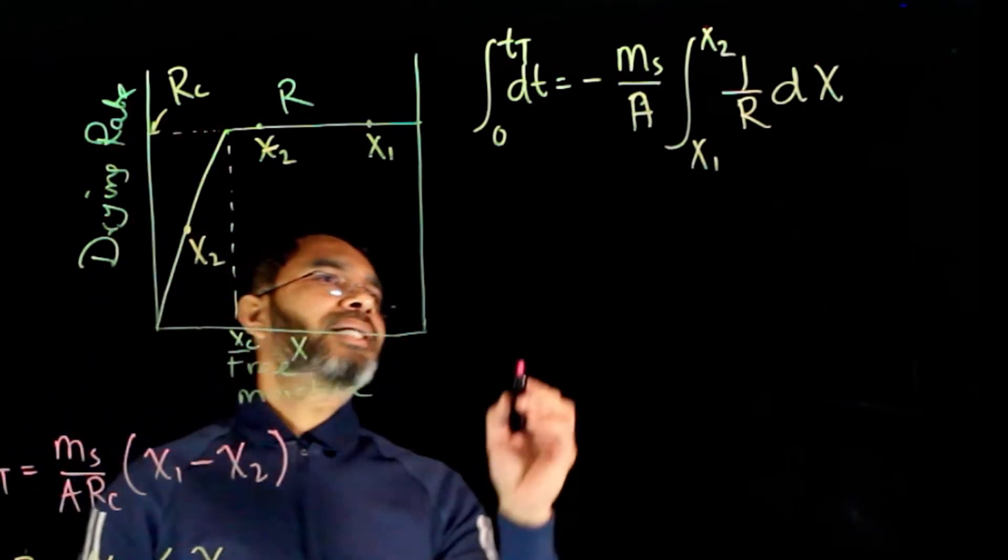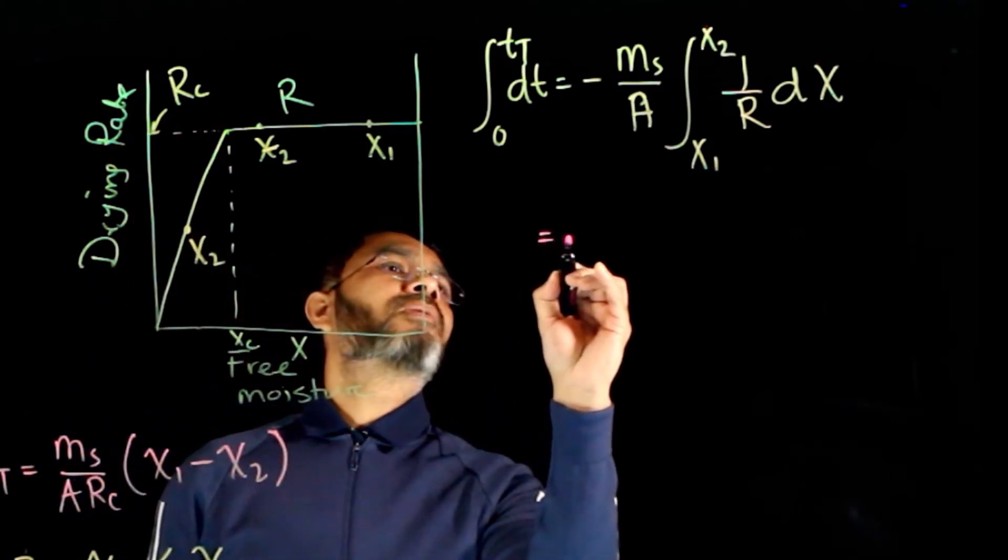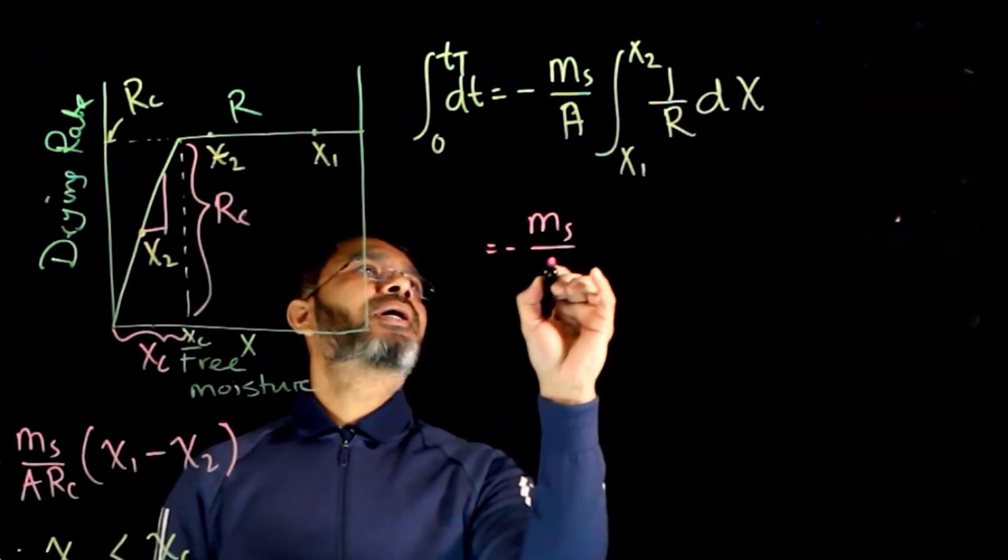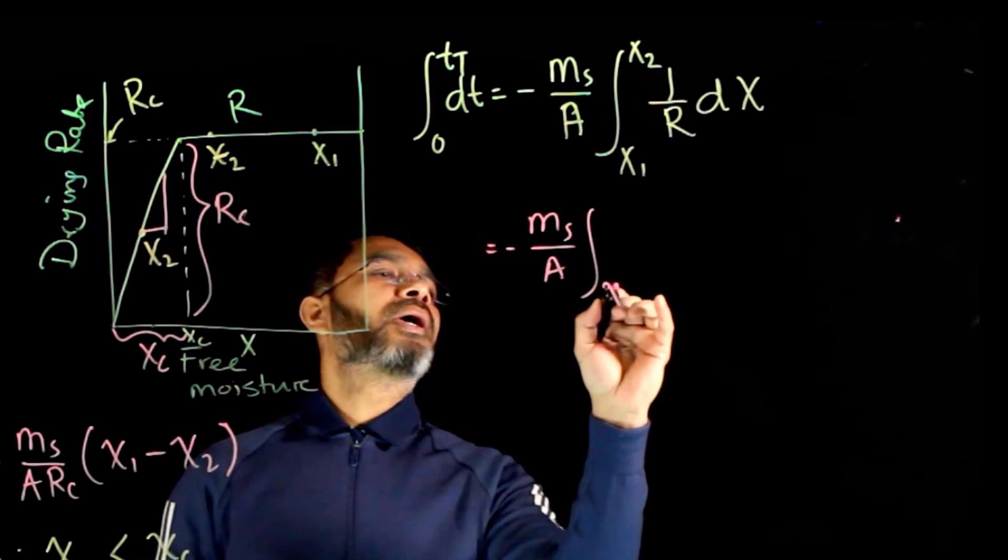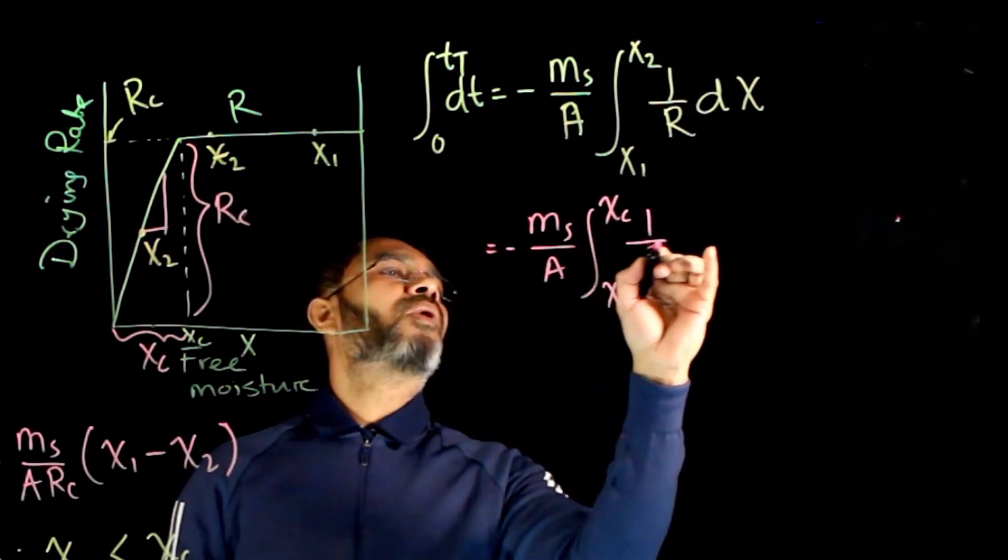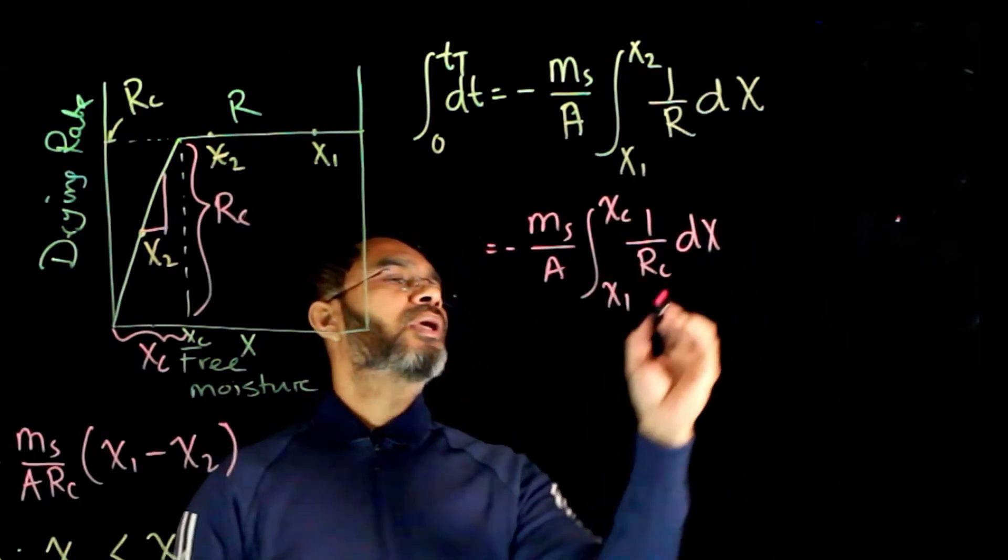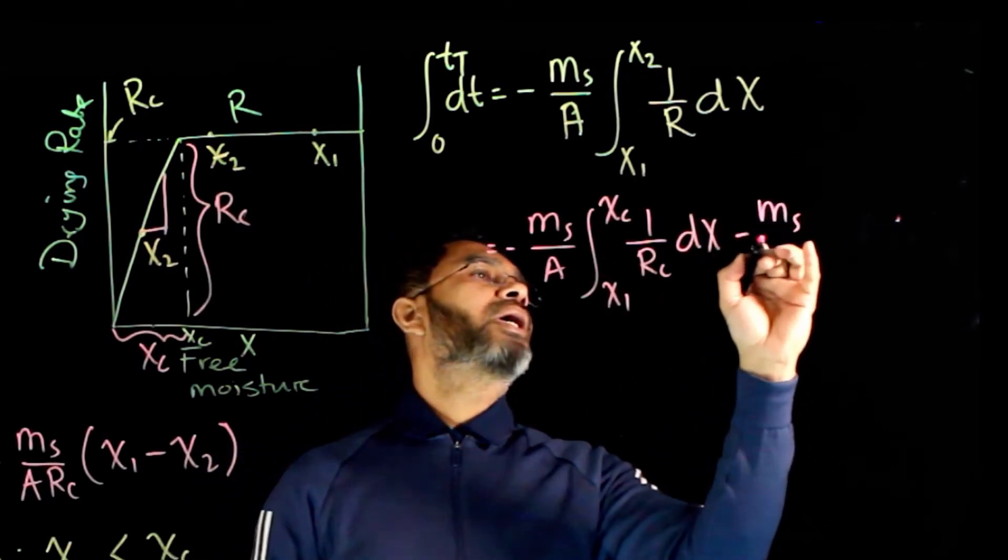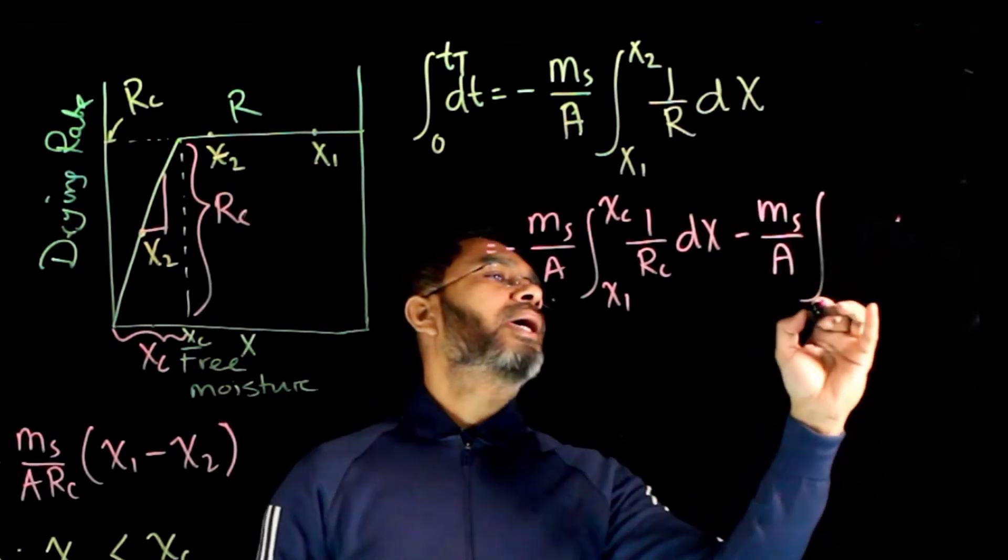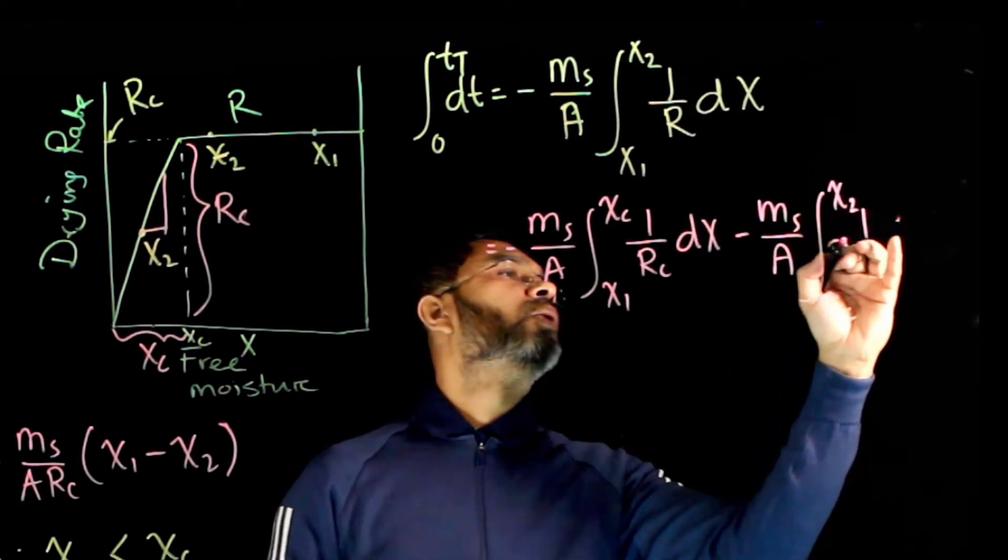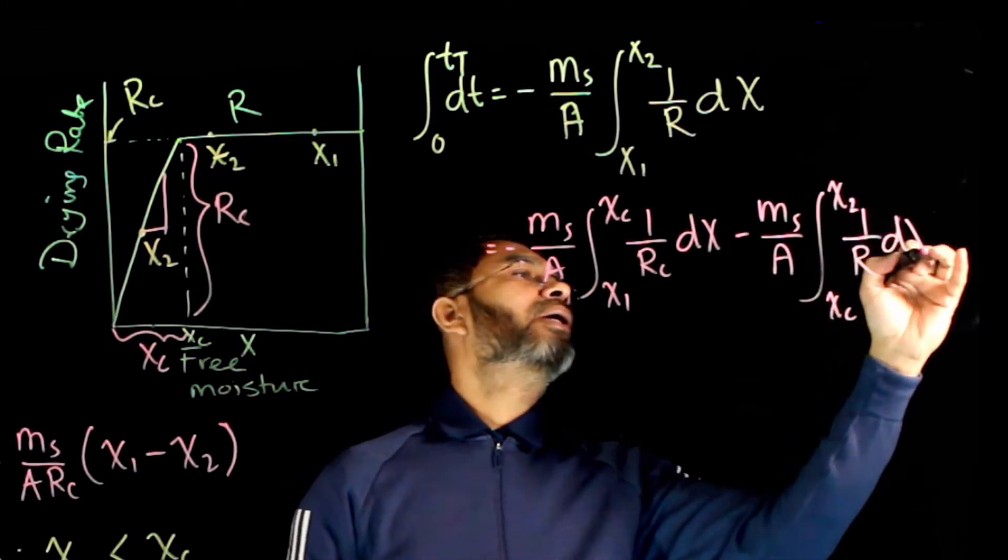So right-hand side, we'll have to take the integration in two parts. First part, ms over a, x1 to xc, 1 over rc dx, minus the second part, ms over a, xc to x2, 1 over r dx.